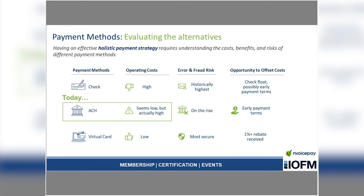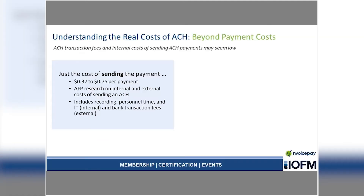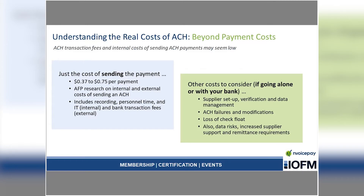Today I really want to focus on ACH and what those costs actually are. I spent quite a bit of time researching this and found very little industry research. One thorough report listed the cost of sending an ACH at about 37 to 75 cents per payment. That may seem high, especially if you're only paying 20 or 25 cents per payment on your bank statement. There are internal costs — personal time spent and technology involved — and those are just for sending the payment. The other costs I want to talk about involve all the additional work of managing an electronic payment program: supplier setup, verification, data management, and ongoing maintenance. There's also supplier support and remittance requirements — when you pay by ACH, you've got to come up with remittance information separately, and suppliers are likely going to call with more questions.